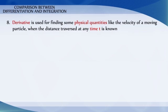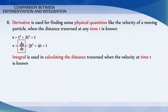The derivative is used for finding some physical quantities like the velocity of a moving particle when the distance traversed at any time t is known. Similarly, the integral is used in calculating the distance traversed when the velocity at time t is known.